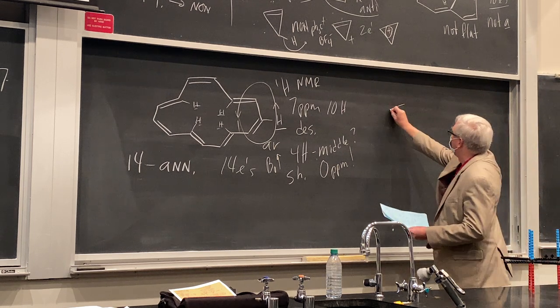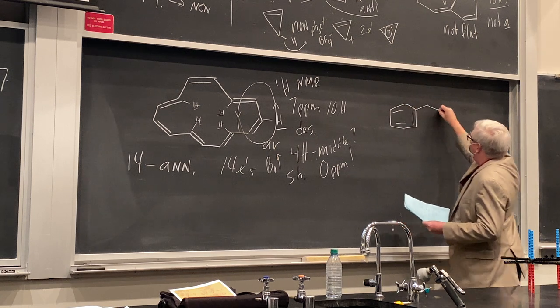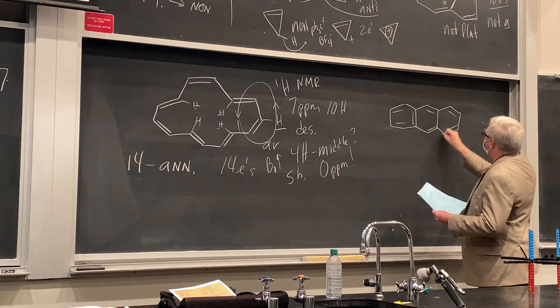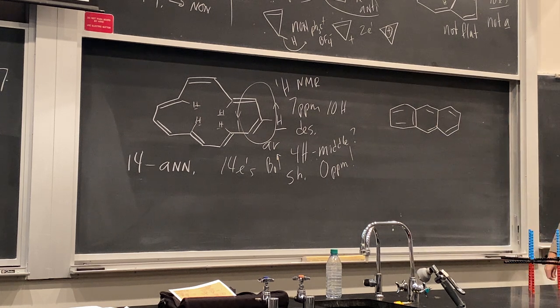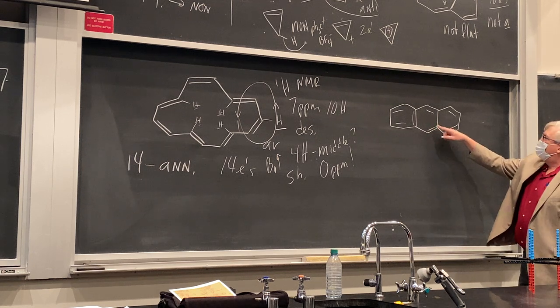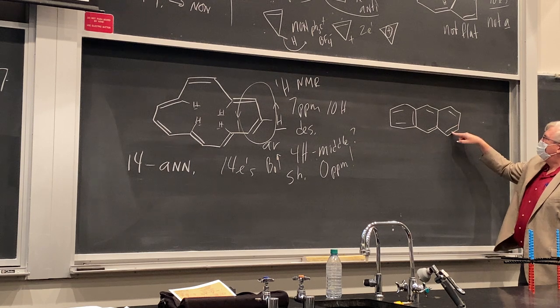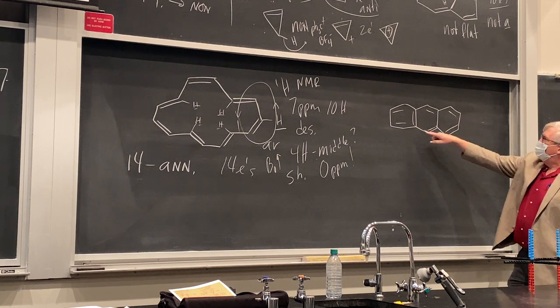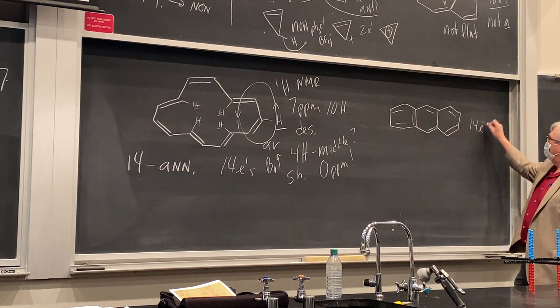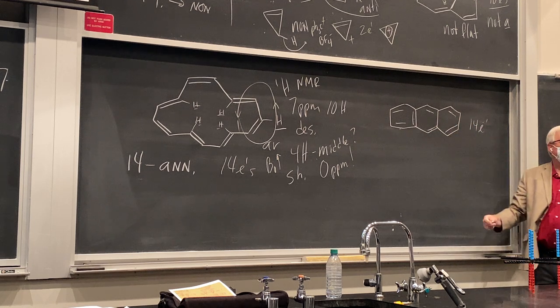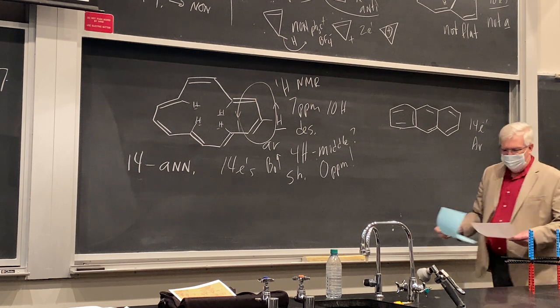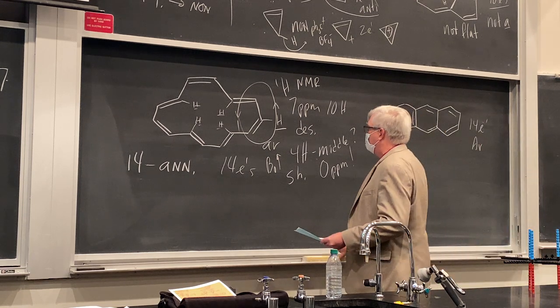All right. How about this one? This is called anthracene. So it's similar to naphthalene. We can say how many pi electrons? 10. 1, 2, 3, 4, 5, 6, 7, 8, 9, 10, 11, 12, 13, 14. Again, right? So is it aromatic? Yeah. Okay? So anthracene and some of these polynuclear aromatics are pretty well known also.